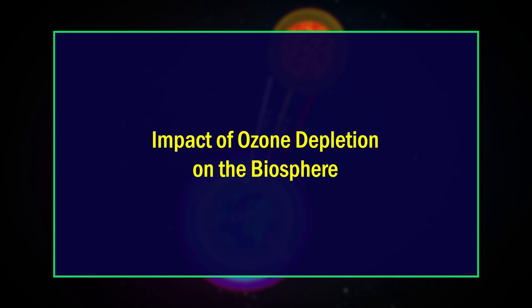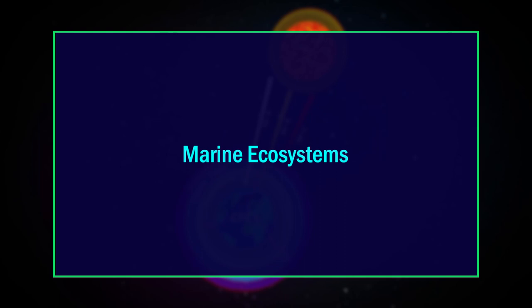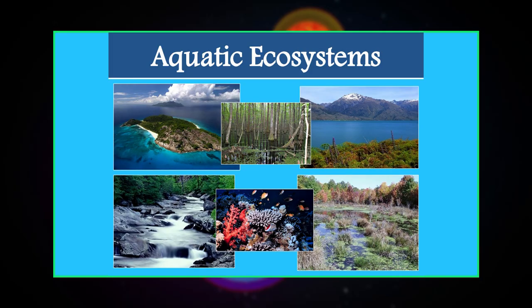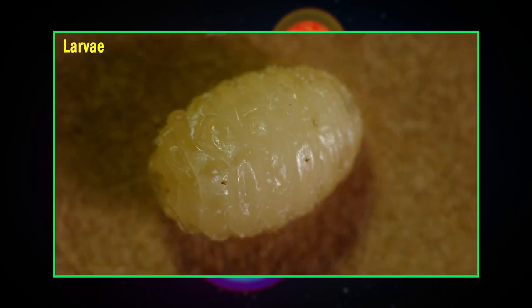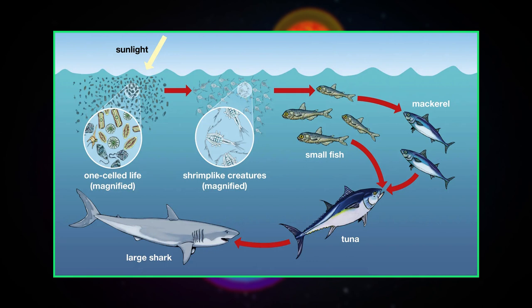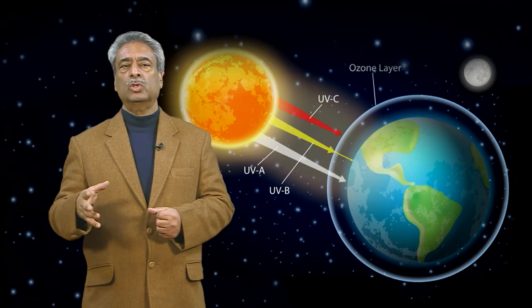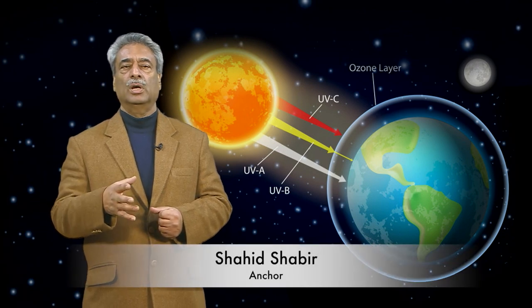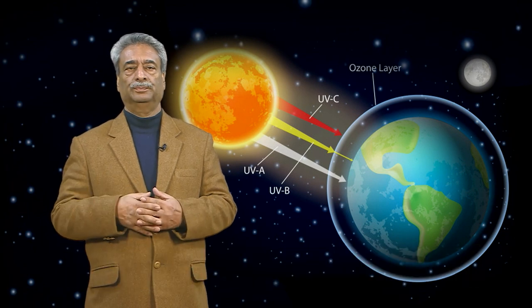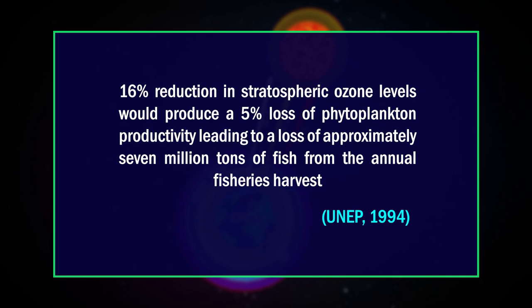The impact of ozone depletion on the biosphere — particularly on marine ecosystems — is of great concern. The effects on phytoplankton and larvae of higher organisms are especially important, as these organisms are a critical link in the marine food chain and support all other sea life. Current UVB levels are also limiting factors for early development stages of fish, shrimp, crab, amphibians, and other animals. One study estimated that a 16 percent reduction in stratospheric ozone would produce a 5 percent loss of phytoplankton productivity, leading to a loss of approximately 7 million tons of fish from the annual fisheries harvest.